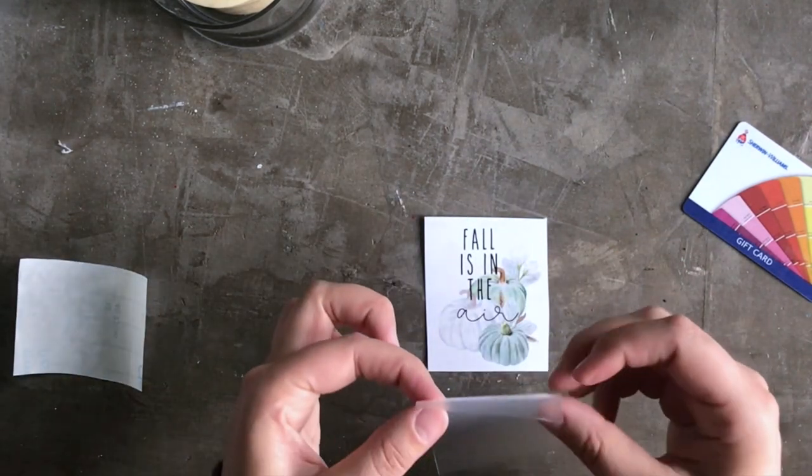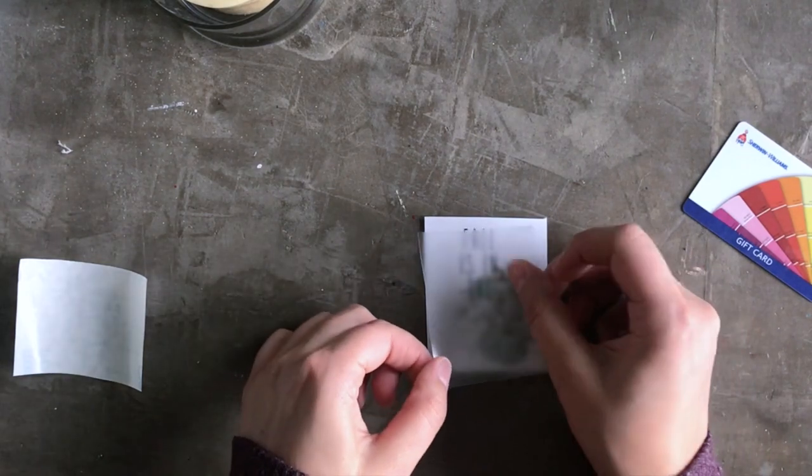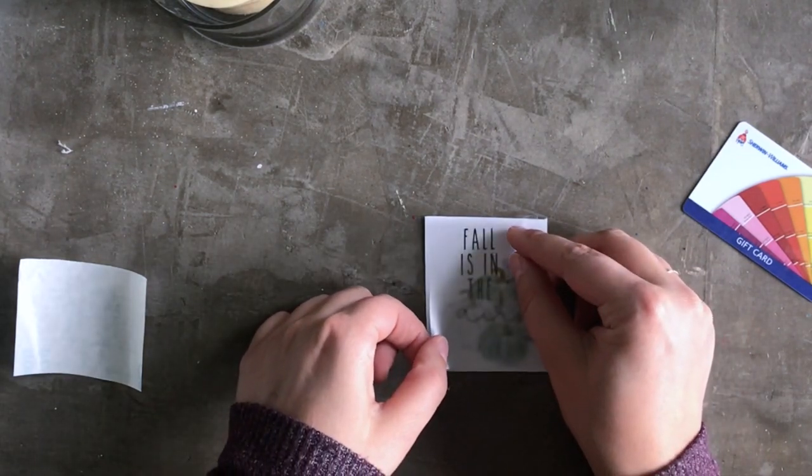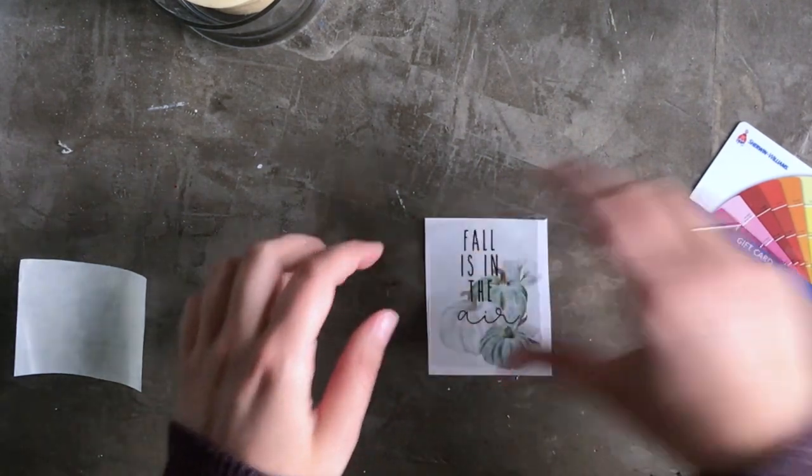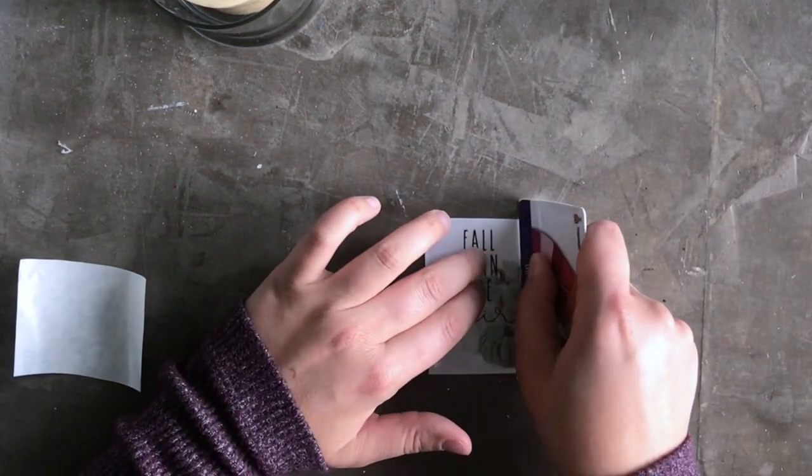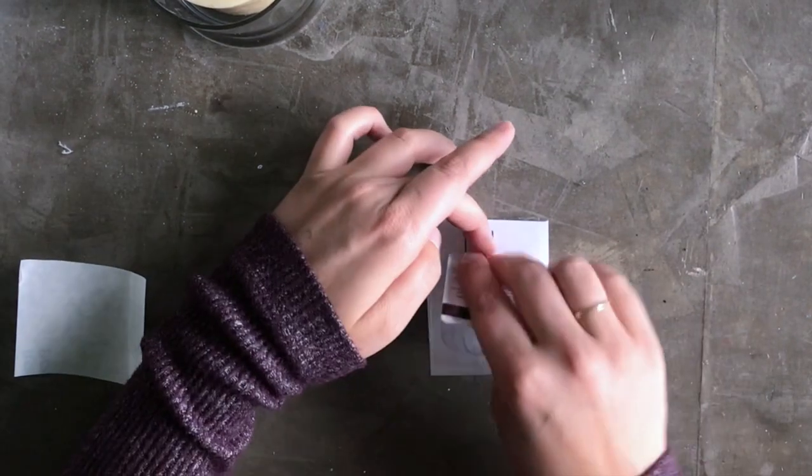There we go. Okay. And then I'm just going to try not to get too many fingerprints on it. Start at the top and roll, smooth down from the center and then out.